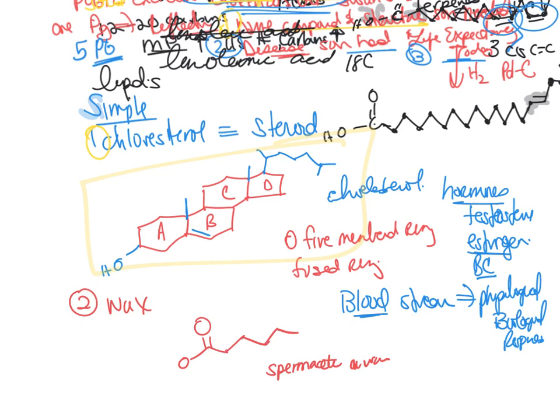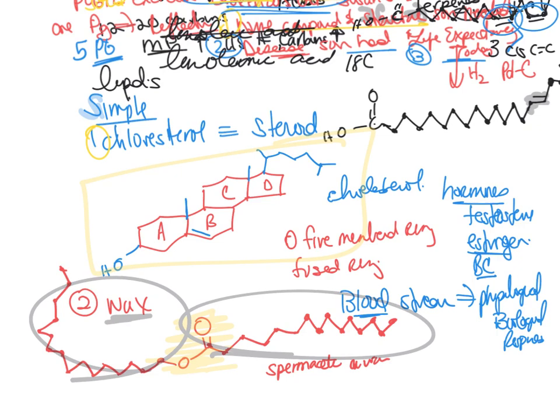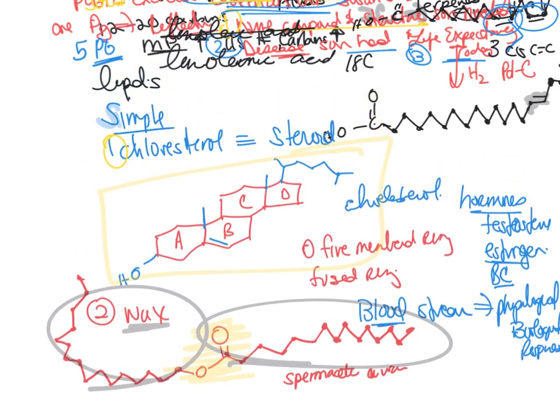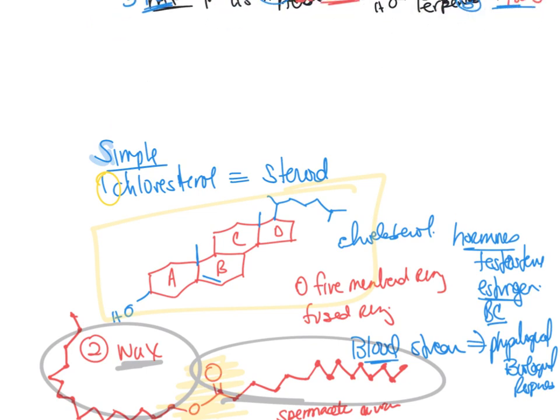You have even number of carbons over here, and then same thing here. So you see that you have an ester, but it's different than the fatty acid because it has a long chain on both sides, and that's what makes it a wax. And structure determines function. That's two of your simple structures.